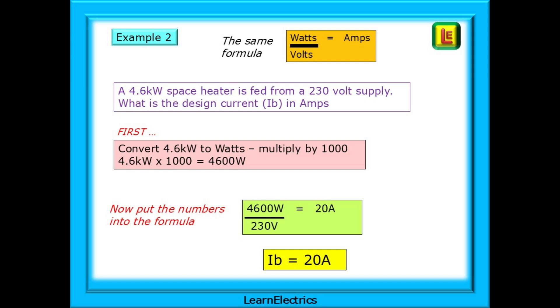Another example. This time, a 4.6 kilowatt space heater is fed from a 230 volt supply. What is the design current, IB, in amps? The first thing we must do is to convert kilowatts into watts. To do this, multiply the kilowatts by 1000 so that 4.6 kilowatts is the same as 4,600 watts. Now we can put the numbers into the formula. 4,600 watts divided by 230 volts is 20 amps. And this is our answer. IB, the design current, is 20 amps. And we will use this 4.6 kilowatt heater for the rest of the video.